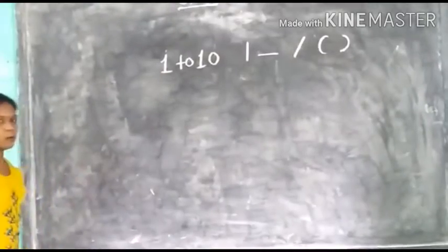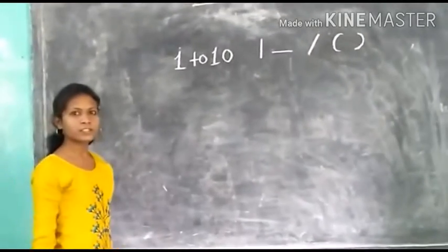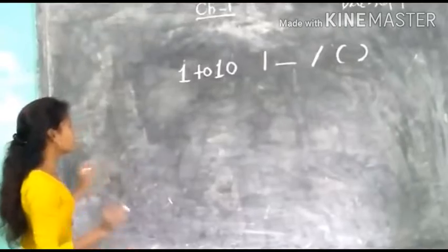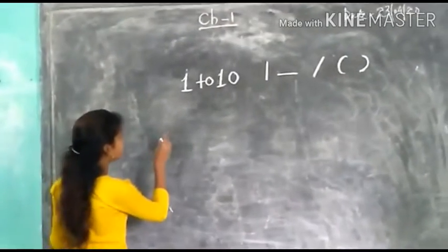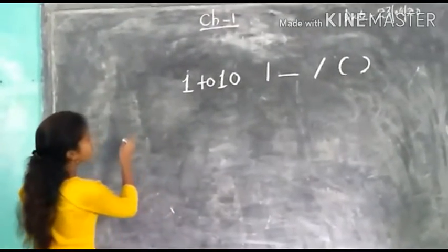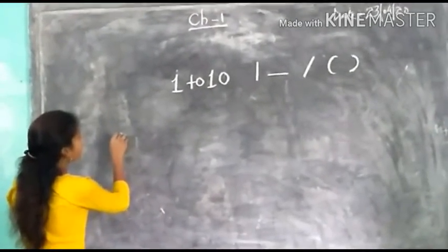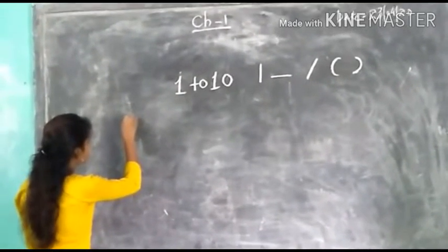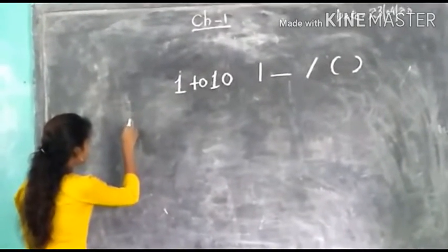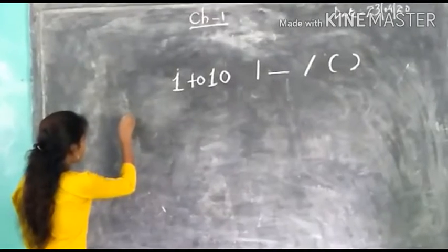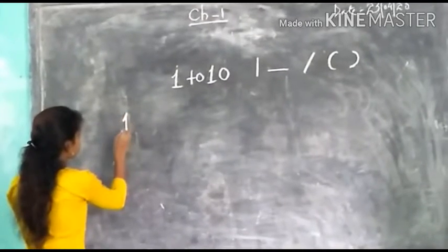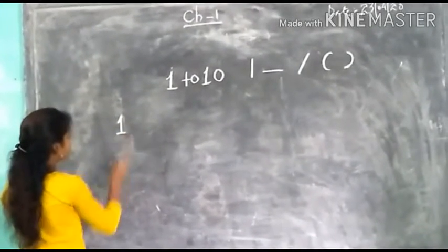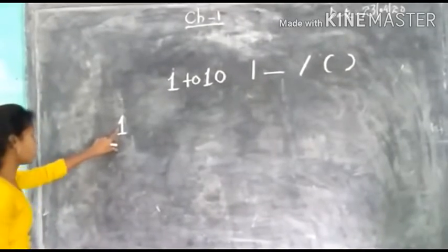Now, we will learn how to write number 1. Number 1. First, we will take a standing line, then sliding line, then sleeping line. This is number 1.